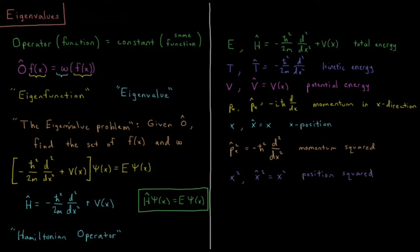What we have a lot in quantum mechanics is called the eigenvalue problem: given an operator, find the set of eigenfunctions and eigenvalues for that operator. This is very important because the Schrödinger equation is an eigenvalue equation.